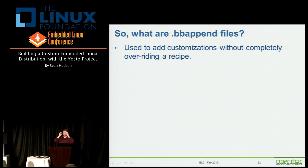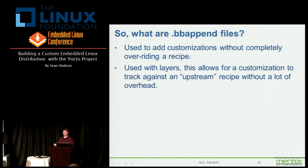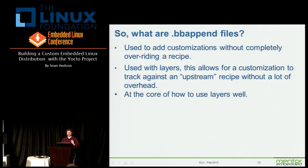So what then is a bbappend? Recipes are captured in a .bb file — that stands for BitBake. A bbappend file is a way to add customizations without completely throwing away the old recipe. This is used with layers, and in particular to allow customization that can track against an upstream. So if you have a specific patch you want to apply but you want to continue tracking an upstream package, this is the way to do it. This is the core reason why you want to do this — be careful about how you segregate your layers. The first thing you'll do when building your own distro is create your own layer for your distro or hardware.